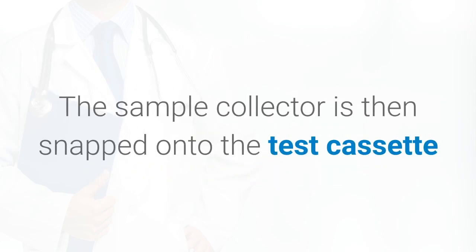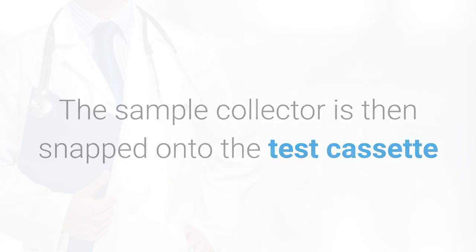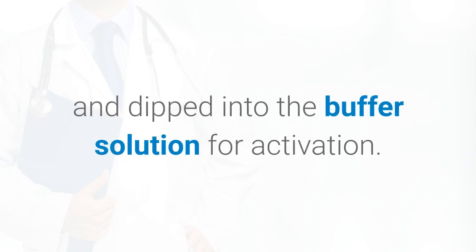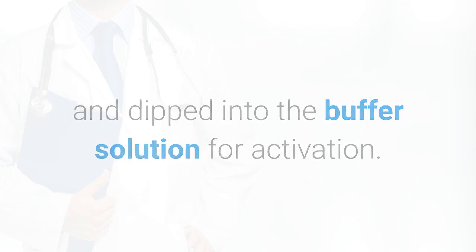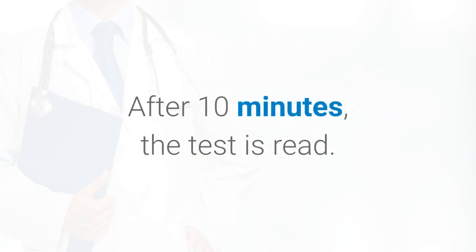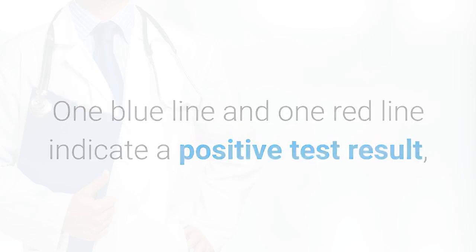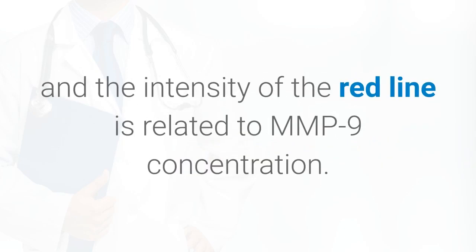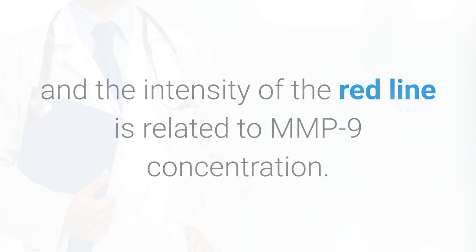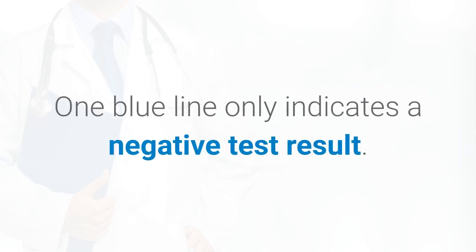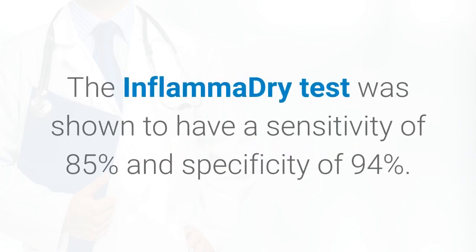The sample collector is then snapped onto the test cassette and dipped into the buffer solution for activation. After 10 minutes the test is read: one blue line and one red line indicate a positive test result, and the intensity of the red line is related to MMP9 concentration. One blue line only indicates a negative test result.